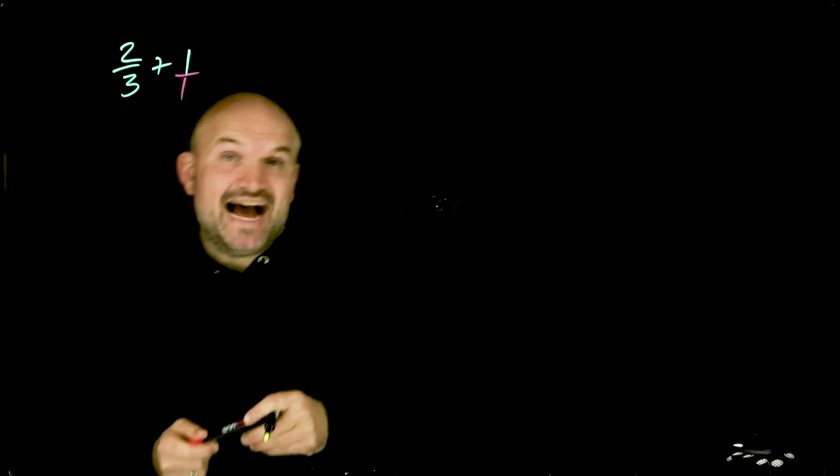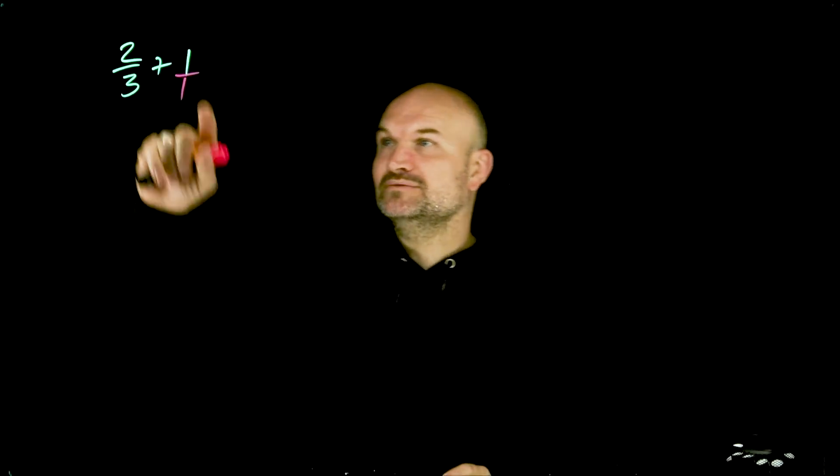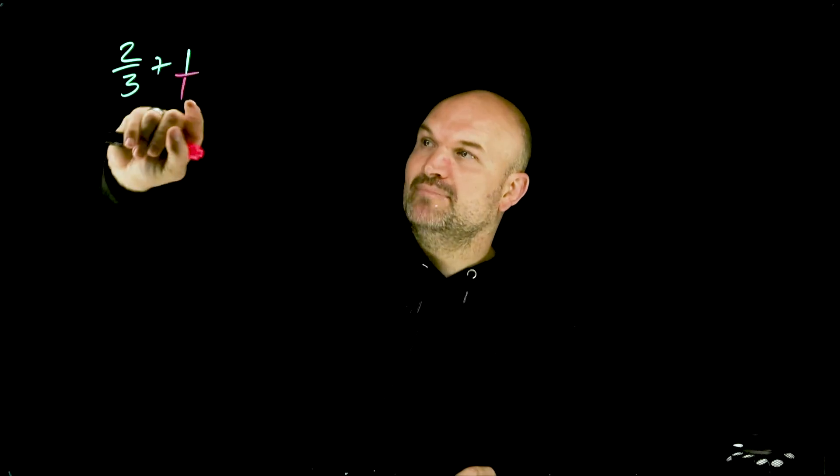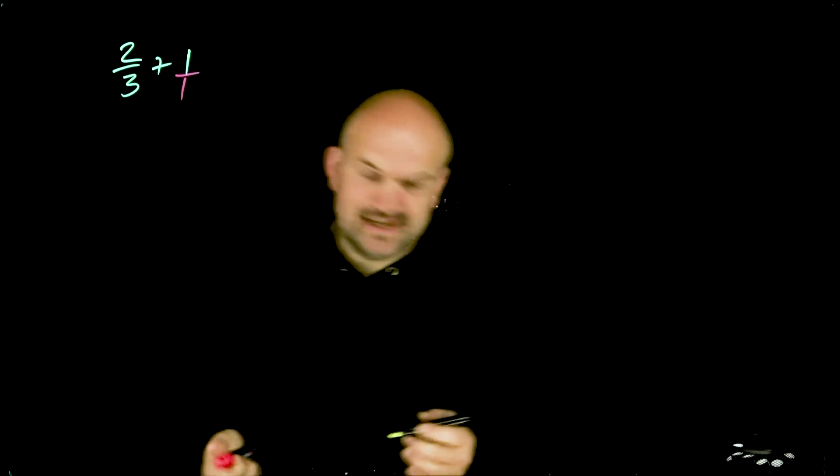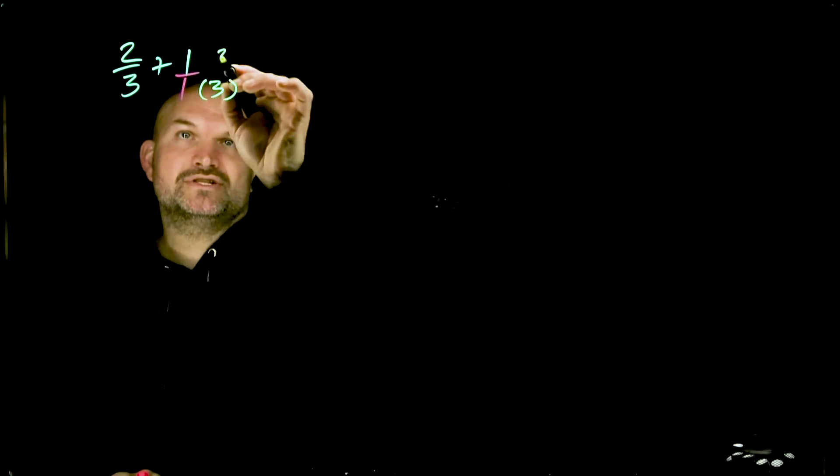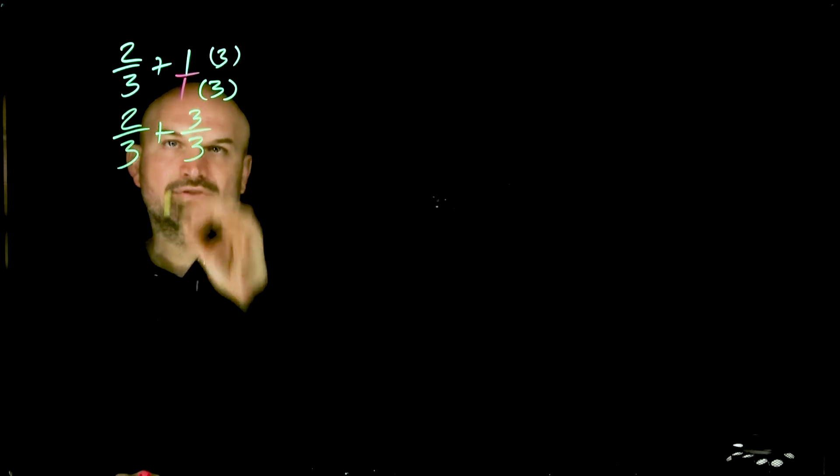Now we need to add these two fractions together, but we have to get a common denominator. So what we need to do is think about a number that we can multiply by one to get this same denominator over here as three. And in this case, you can see hopefully that it's pretty simple. It's just going to be 3/3. So now I can rewrite the problem as 2/3 + 3/3.